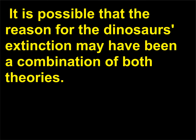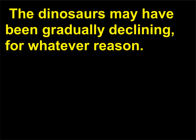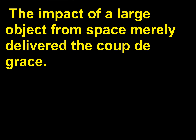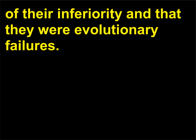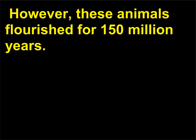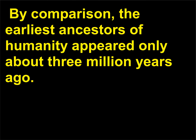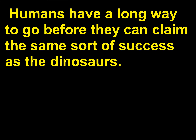It is possible that the reason for the dinosaurs' extinction may have been a combination of both theories. The dinosaurs may have been gradually declining, and the impact of a large object from space merely delivered the coup de grâce. The fact that dinosaurs became extinct has been cited as proof of their inferiority and that they were evolutionary failures. However, these animals flourished for 150 million years. By comparison, the earliest ancestors of humanity appeared only about 3 million years ago — humans have a long way to go before they can claim the same sort of success as the dinosaurs.